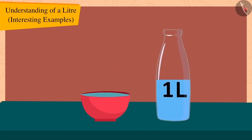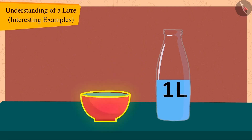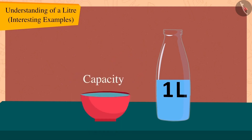Children, can you tell me what this means? This means that Bholla's bowl has a capacity of less than one litre.